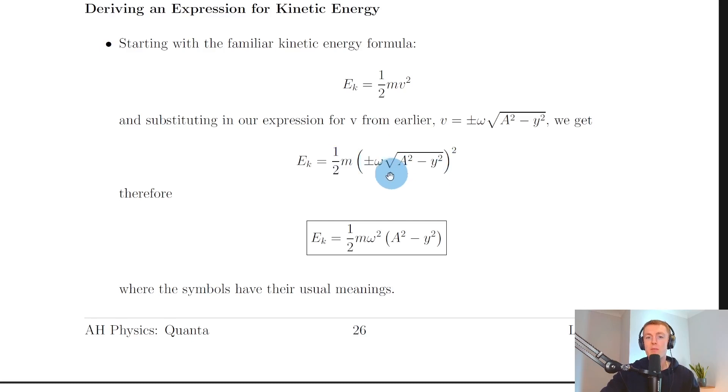If you expand this term by squaring, the omega becomes ω², and squaring the square root cancels it out, leaving A² - y² inside. Therefore, we have Ek = ½mω²(A² - y²), where the symbols have their usual meanings.